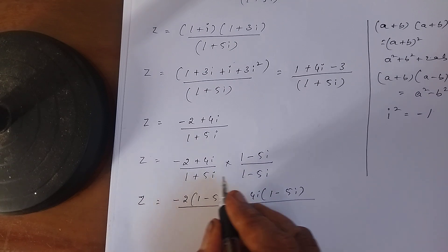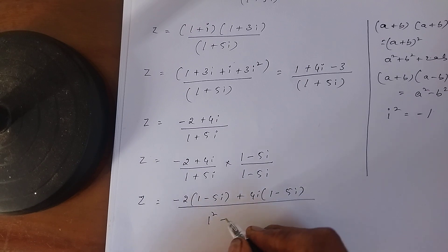So here, this is A+B and this is A-B. A means 1, B means 5i. So 1² minus (5i)².